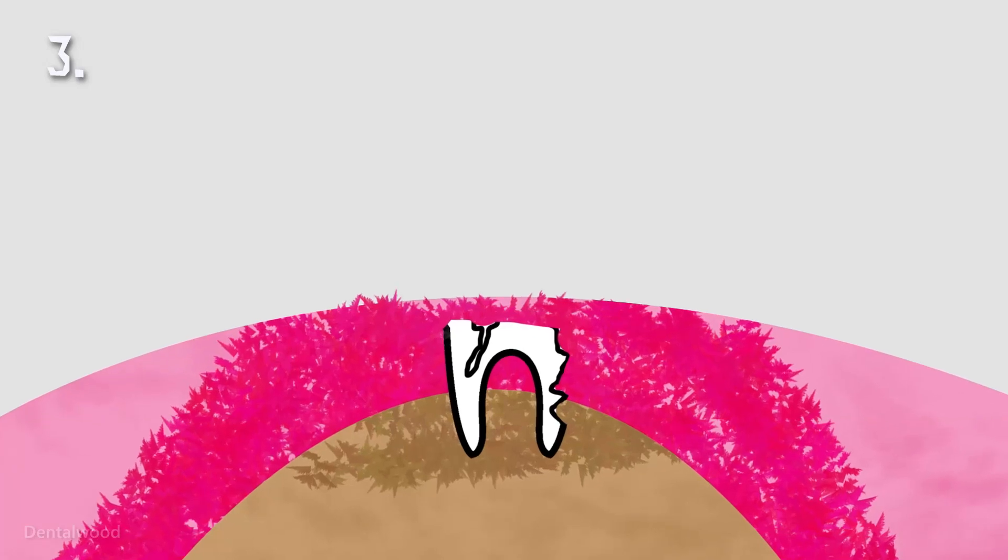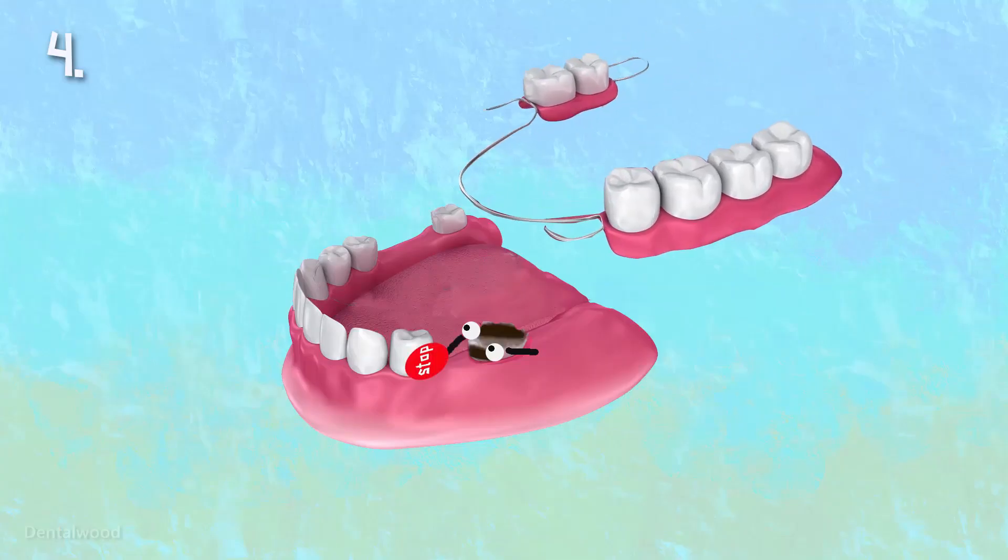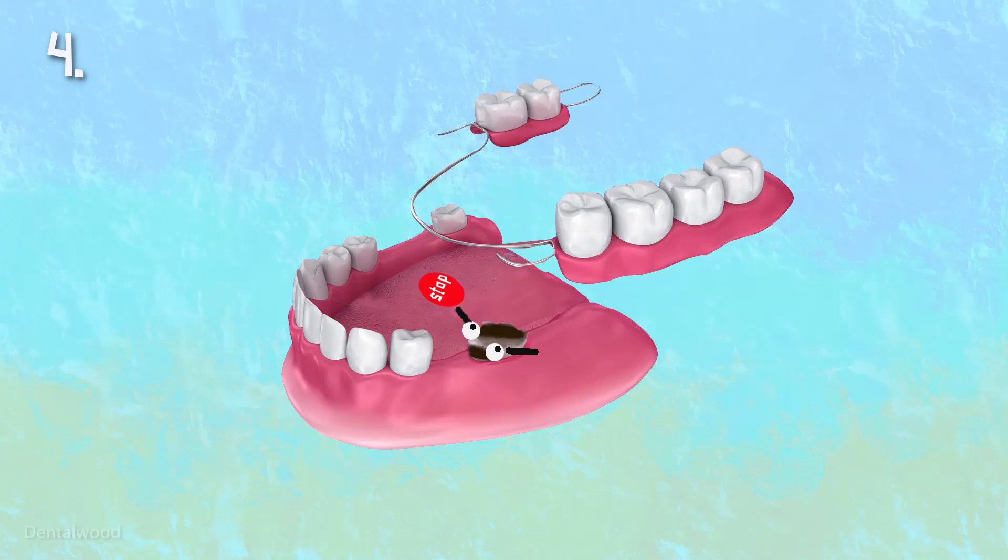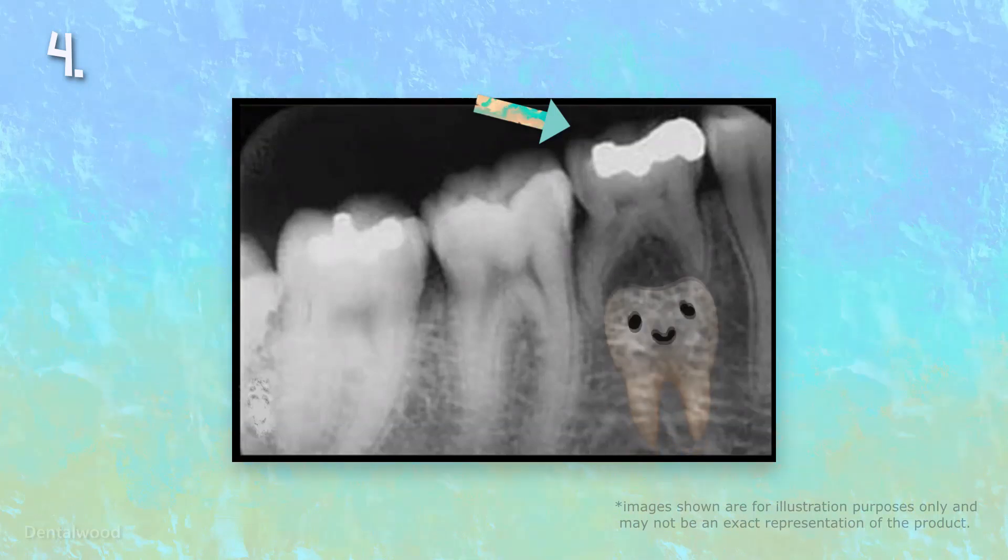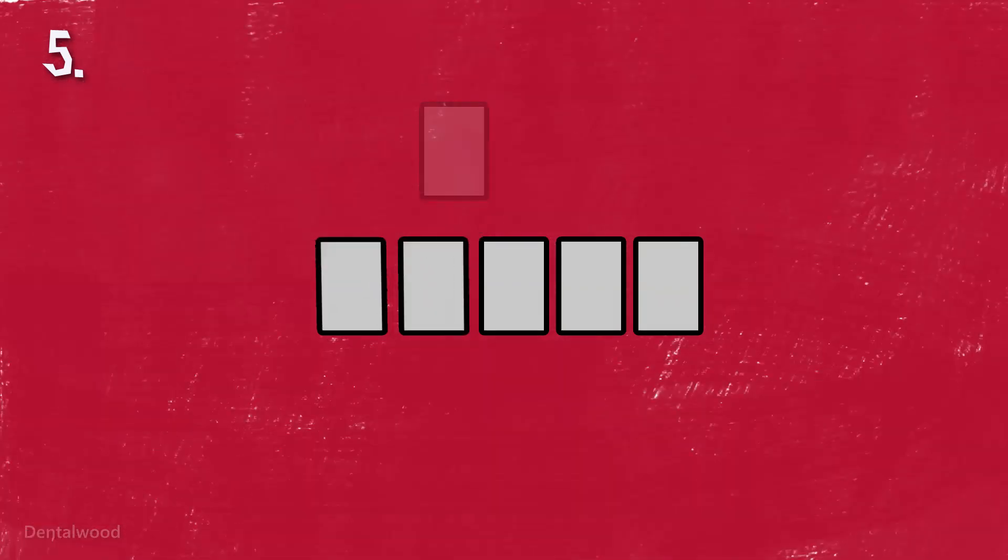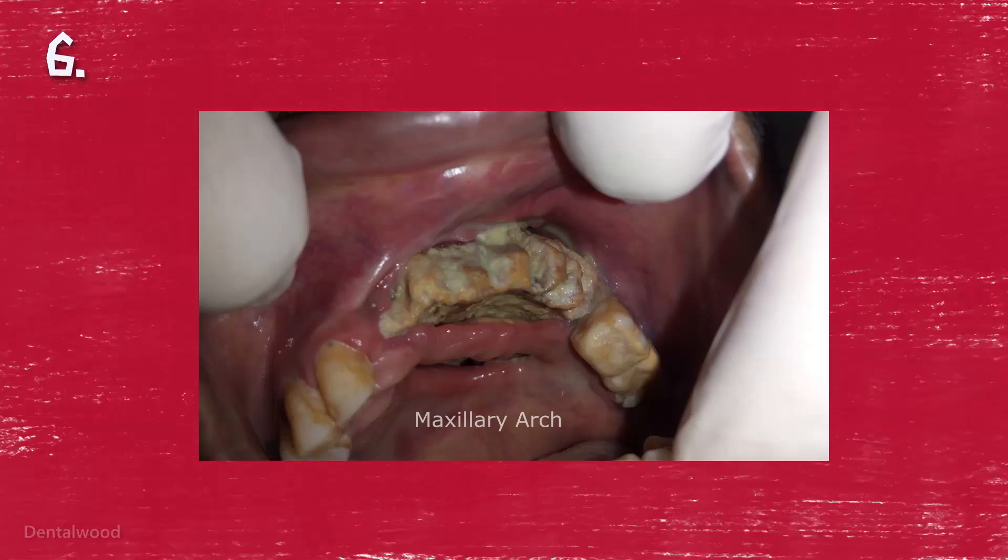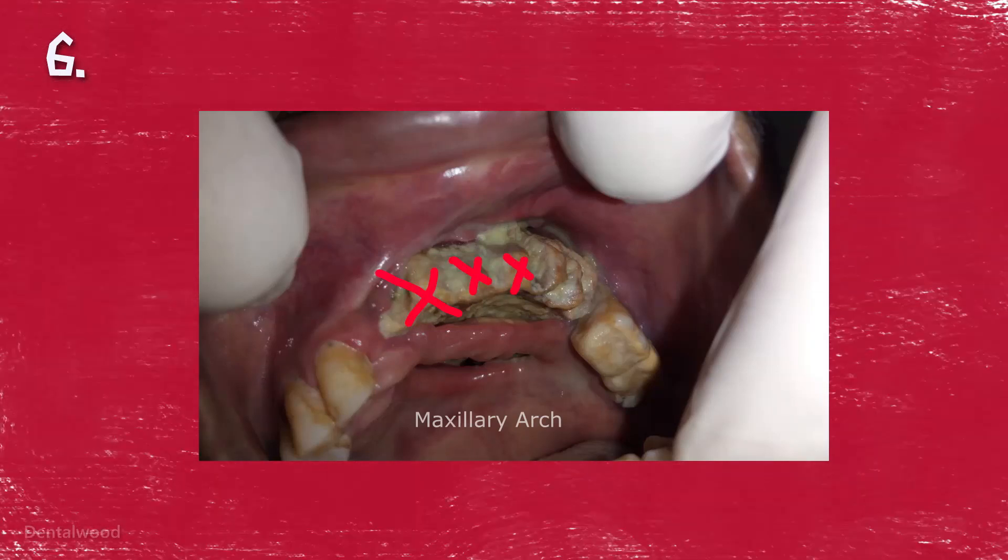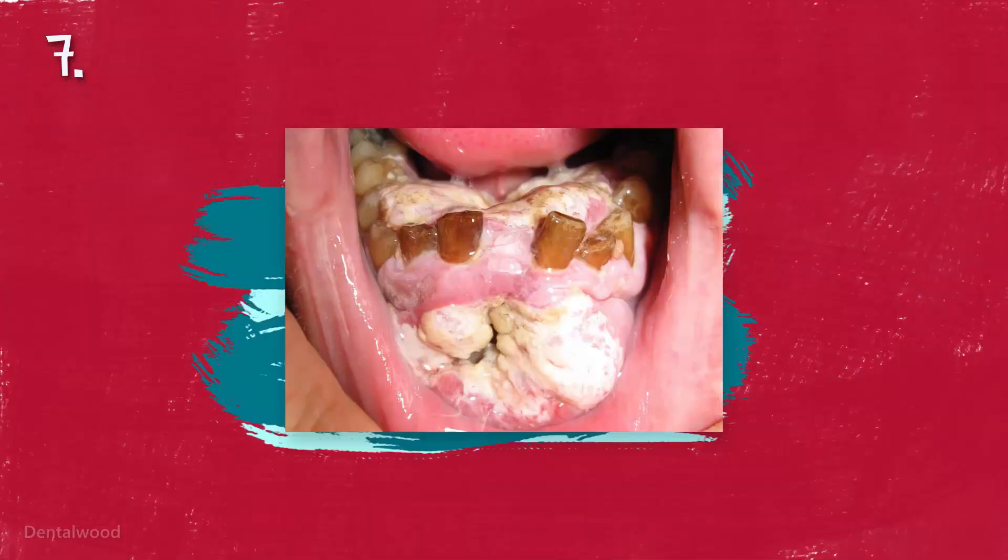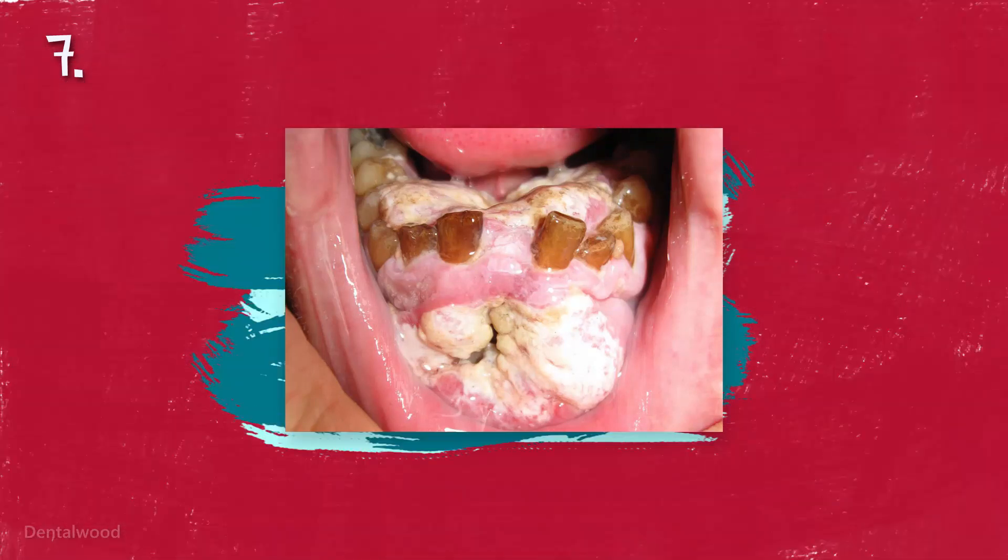Infected roots and root fragments are indicators for extraction. Teeth interfering with placement of partial denture and bridge or any prosthesis. Over retained deciduous teeth that prevent normal eruption of permanent teeth. Teeth which are misaligned and cannot be corrected with orthodontic treatment. And teeth which are resulting in bony pathology like osteomyelitis. In patients with oral malignancy, poorly maintained teeth should be removed.